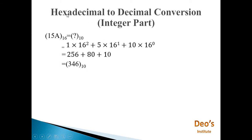Next is hexadecimal to decimal conversion. We use 16 raised to the power of the position of each element. For example, 1 5 A in hexadecimal: A is 10, so 10 multiplied by 16 raised to 0, plus 5 multiplied by 16 raised to 1, plus 1 multiplied by 16 raised to 2. Adding all these gives 346 in decimal.